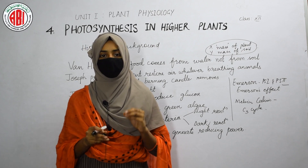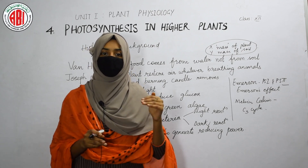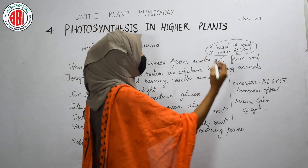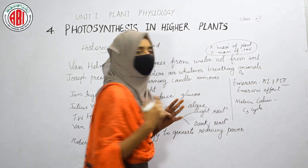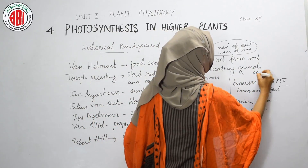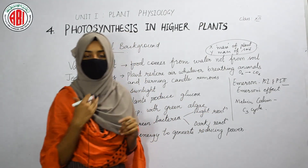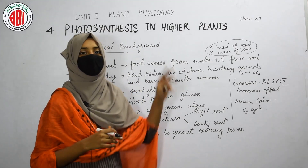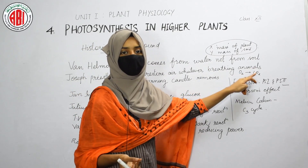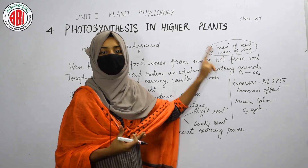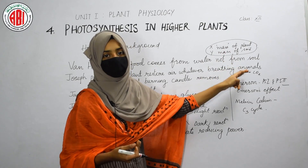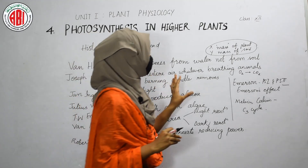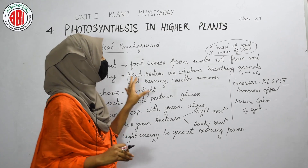Priestley concluded that the gas released by the burning candle is consumed by the plant, and in turn the gas released by the plant is consumed by the animals and the burning candle. We now know that oxygen is required for burning and for animals to breathe, while carbon dioxide is required for photosynthesis. Carbon dioxide released by the burning candle and by the rat is consumed by the plant, and the plant releases oxygen as a byproduct, which is then used by the animals and the candle.